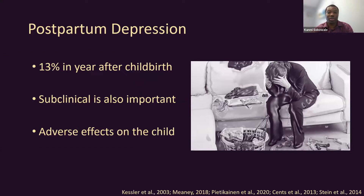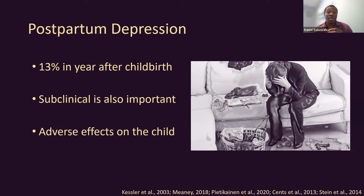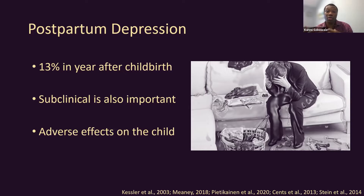Postpartum depression is defined similar to regular depression as five or more depressive symptoms over the course of two weeks. However, for postpartum depression it occurs between birth and the first year postpartum in most definitions. In the United States, 13% of women annually — that's at least 500,000 women — are diagnosed with postpartum depression. When you look at studies with lower clinical cutoffs, folks who don't meet clinical criteria but still have significant depressive symptoms can still have the same effect on the mother's day-to-day functioning. We're interested in postpartum depression not only for its effect on the mother but also on the child and the family system.